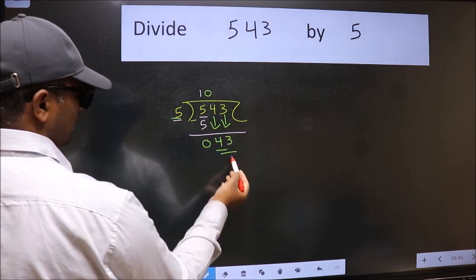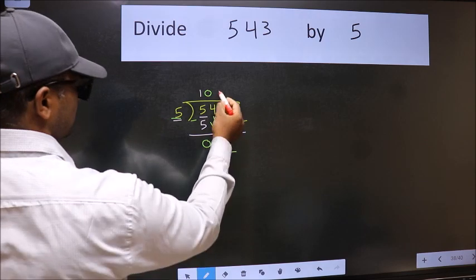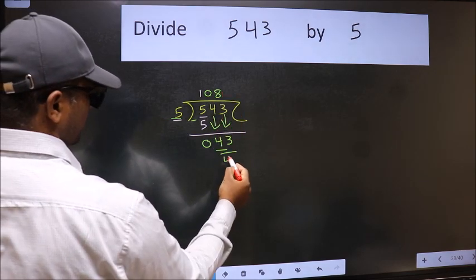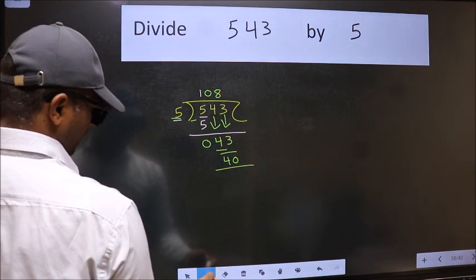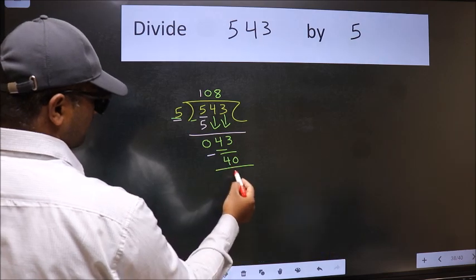Now 43. A number close to 43 in the 5 table is 5 times 8 is 40. Now we should subtract. We get 3.